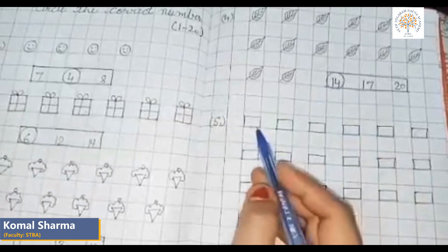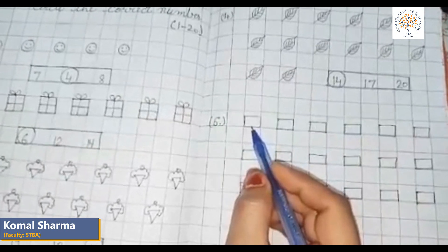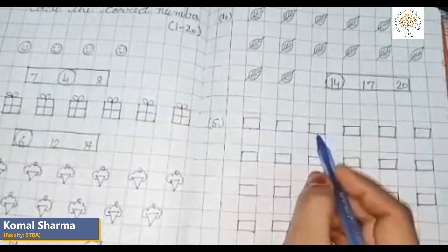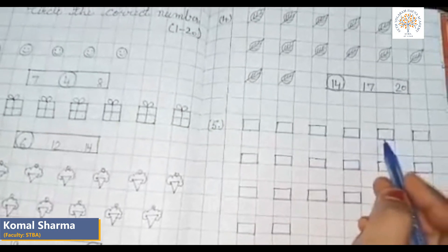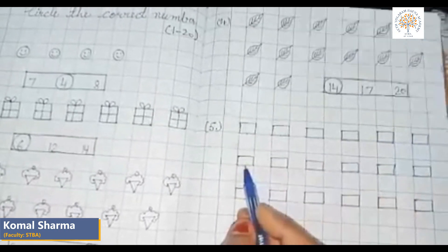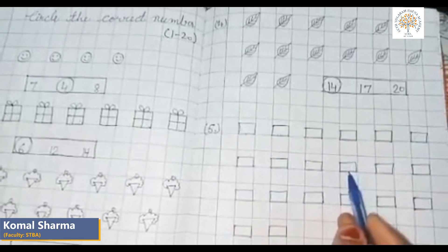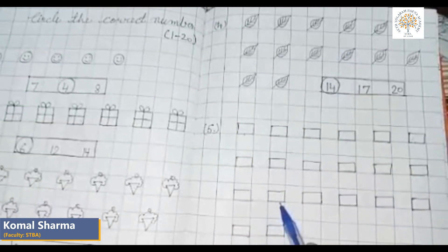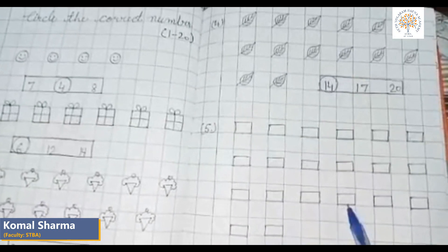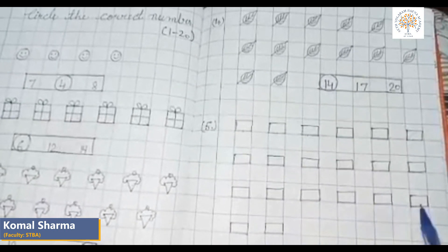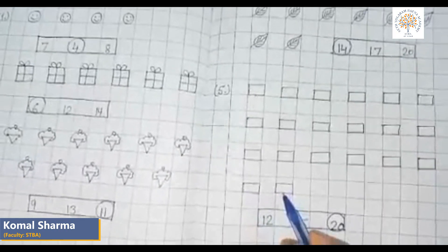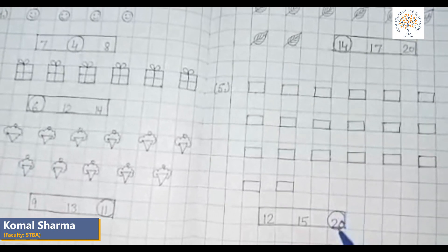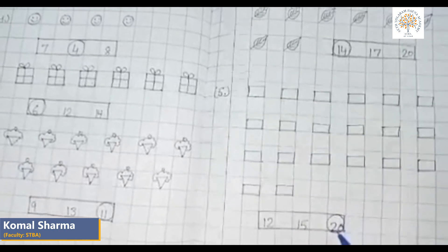Let us count rectangles. How many rectangles are there? One, two, three, four, five, six, seven, eight, nine, ten, eleven, twelve, thirteen, fourteen, fifteen, sixteen, seventeen, eighteen, nineteen, and twenty. There are twenty rectangles. So we will circle the number twenty.